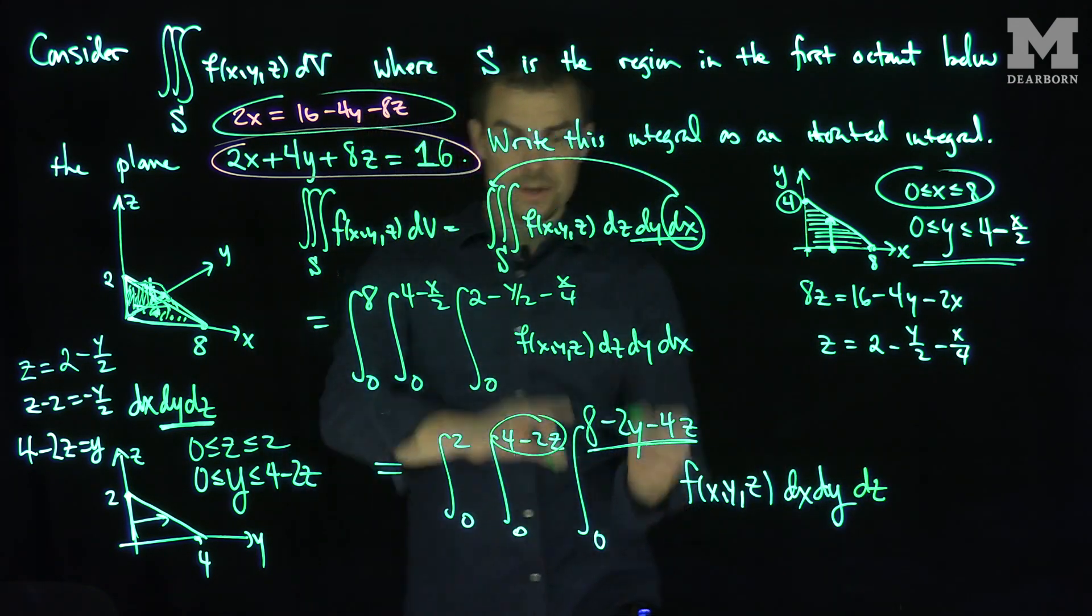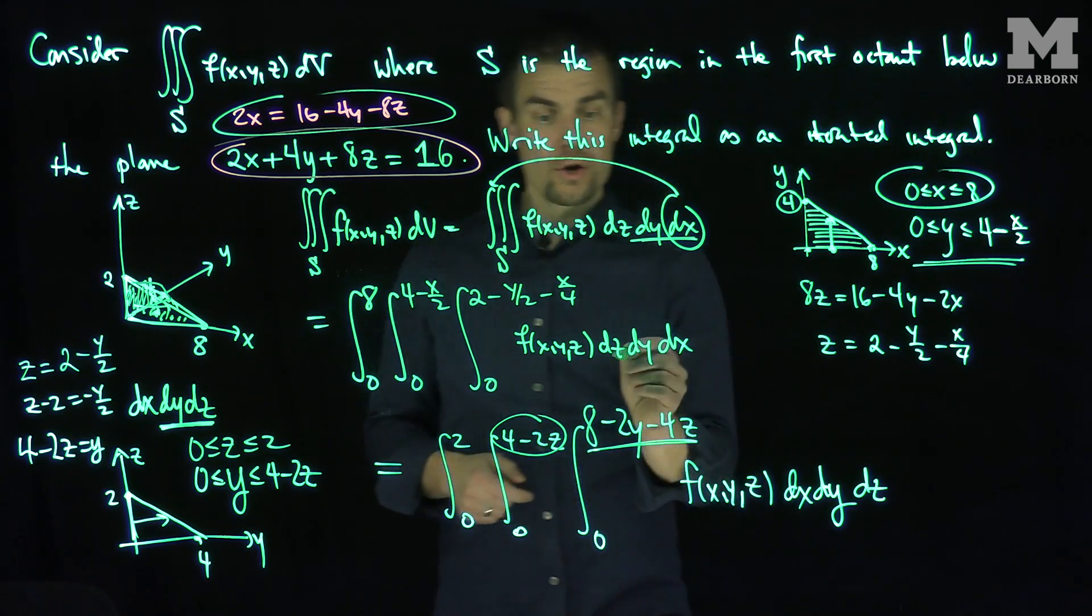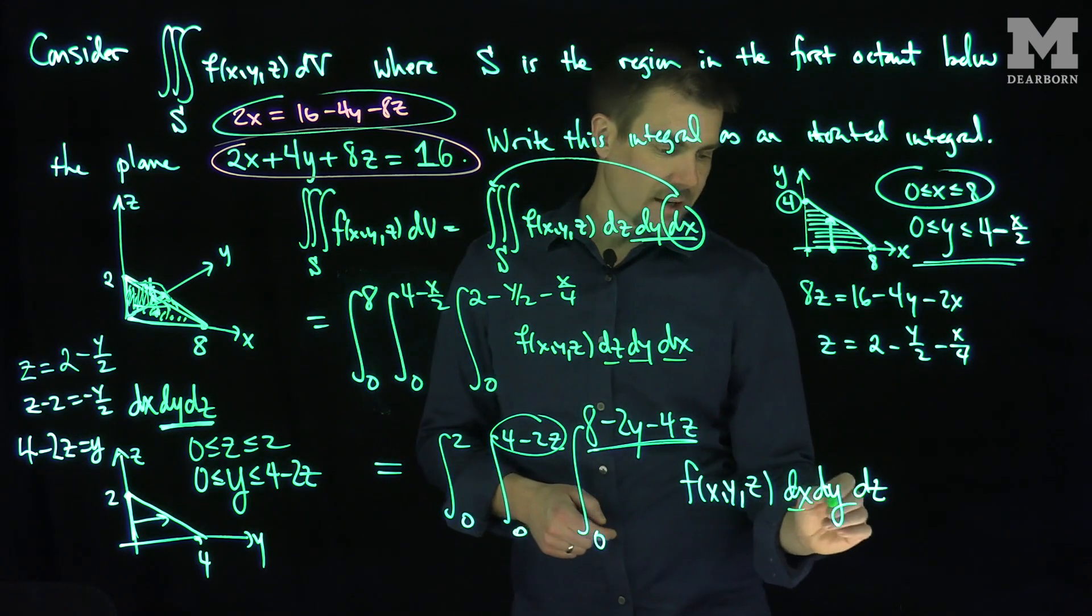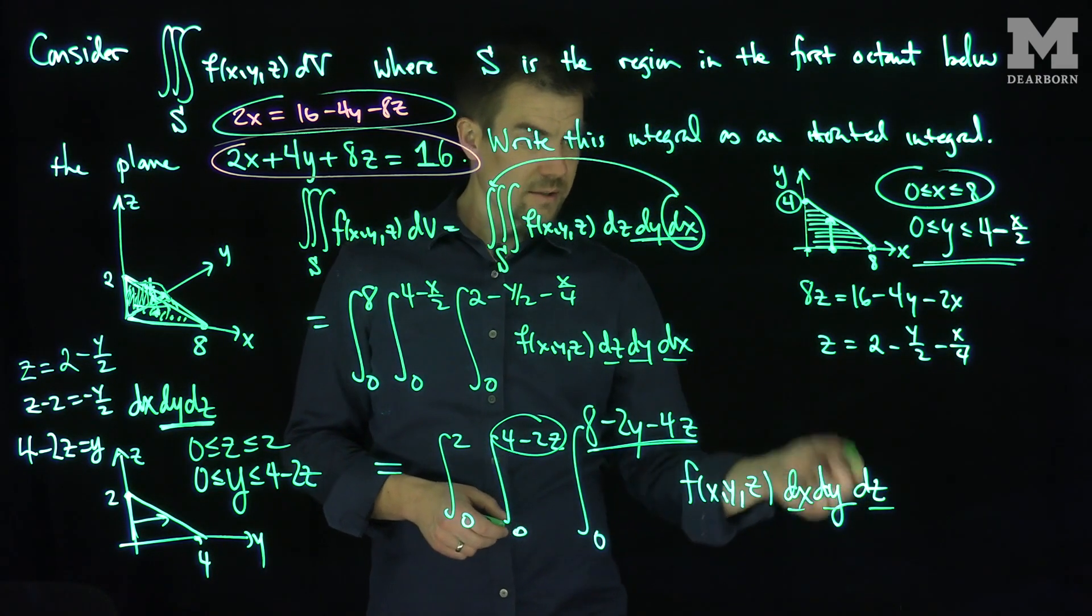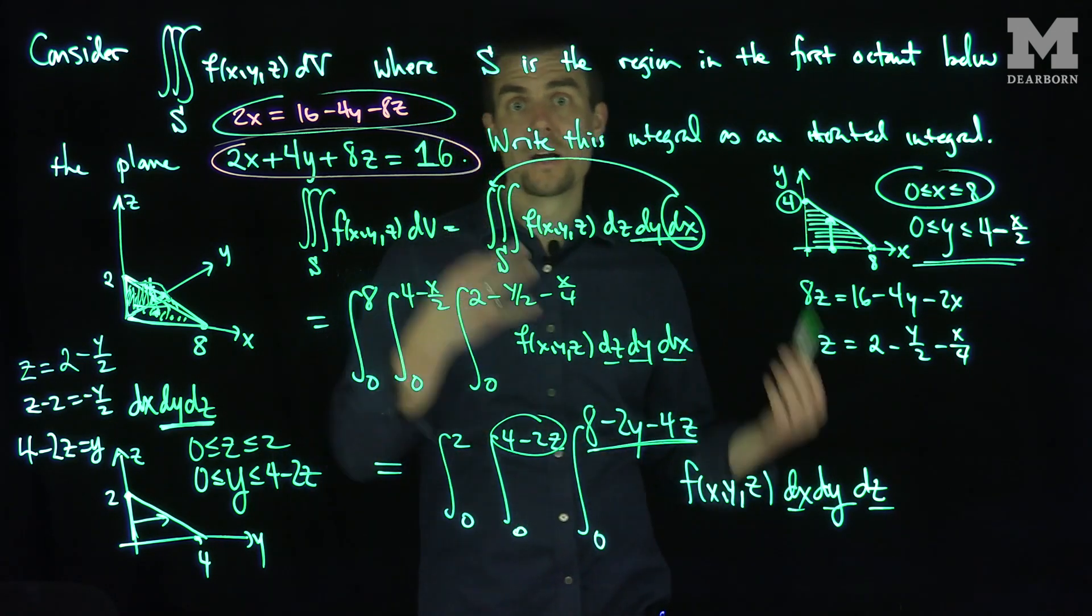Now as an exercise, using this same exact method, there are four other orders of integration to do. You can do dz, dx, dy. You can do dx, dz, dy. Then you can do dy, dx, dz. Or you can do dy, dz, dx. So there are six total possible regions of integration.